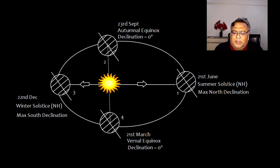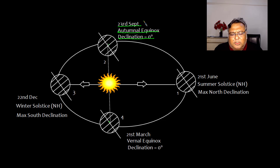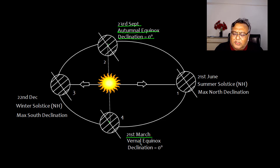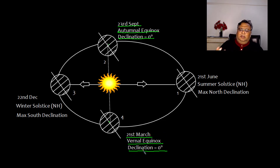Position 2 is the autumnal equinox where the declination is 0, occurring on or about 23rd September. Position 4 is 21st March — vernal equinox — and the declination here is again 0.